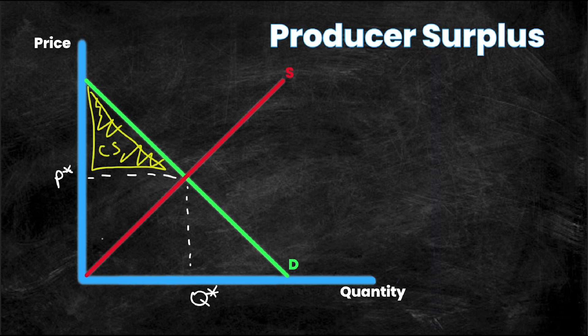Producer surplus is the area under the price that they sell at, so under P star, and above the supply curve. So above the supply curve is right here and now we have a new triangle and this right here is the producer surplus.